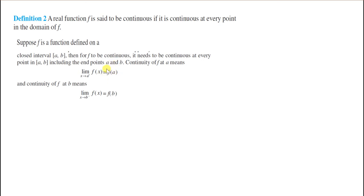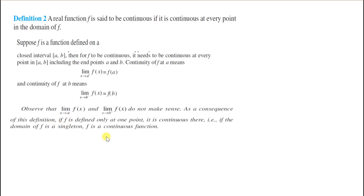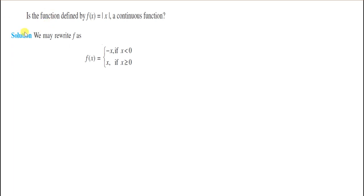Agar function ki a pe jo value hai, agar us point per right-hand limit uske equal hai, then it is continuous at a. Now let us see an example — whether this function is a continuous function or not. Here nothing is specified for its domain, which means we will take its domain as ℝ.